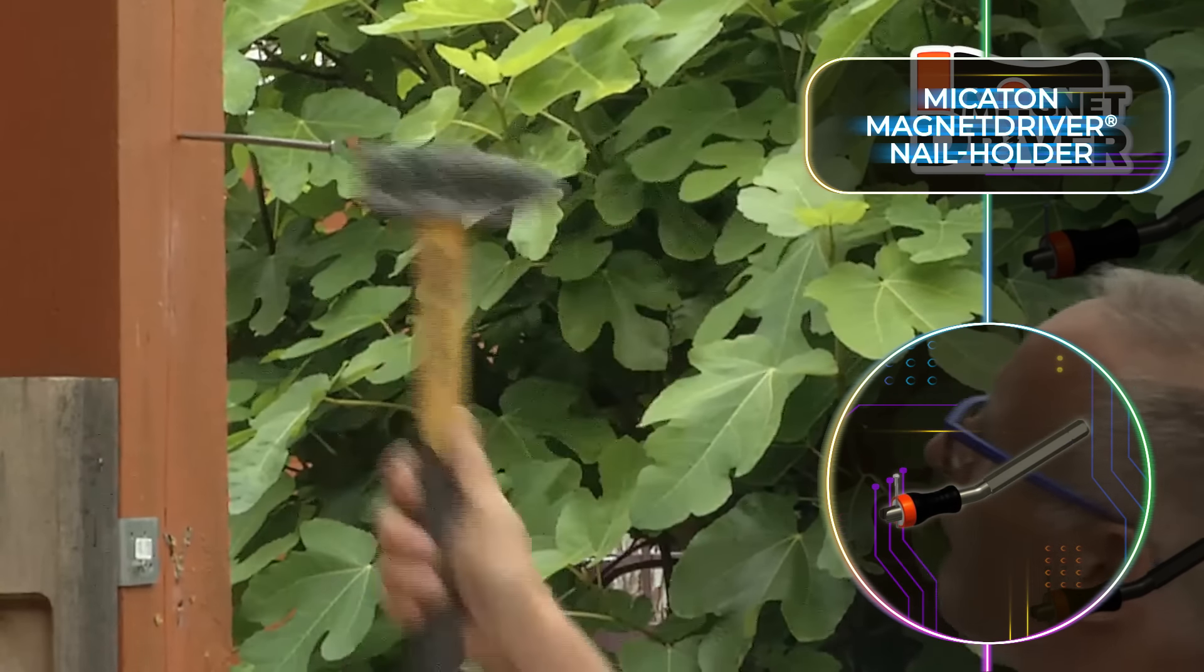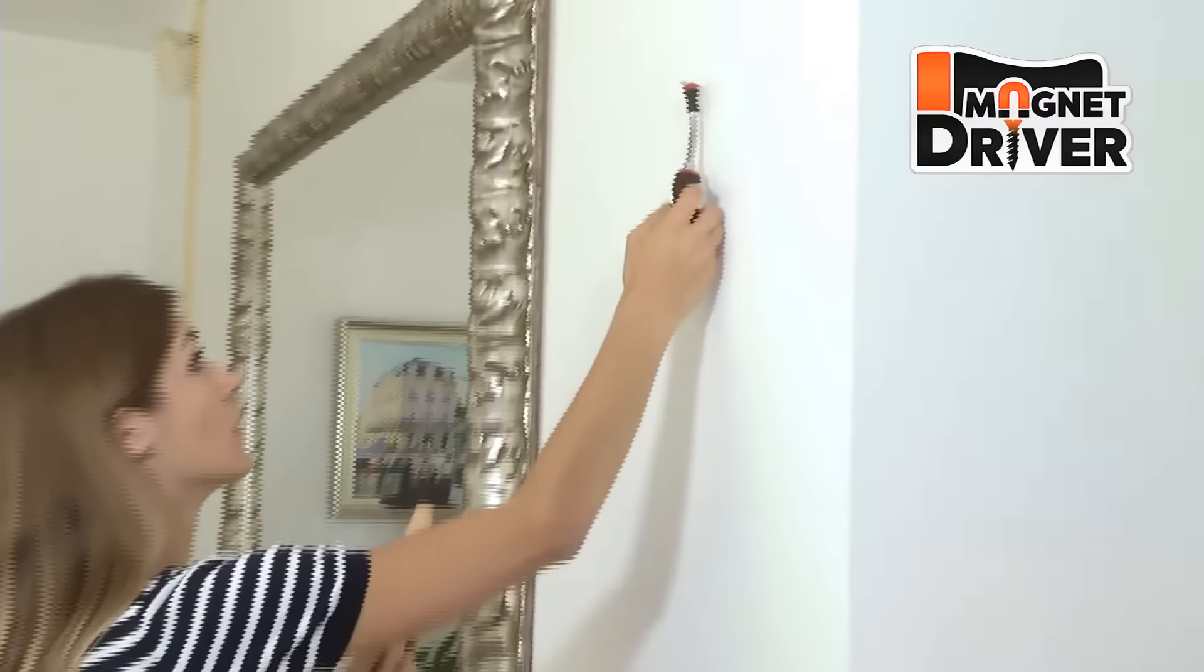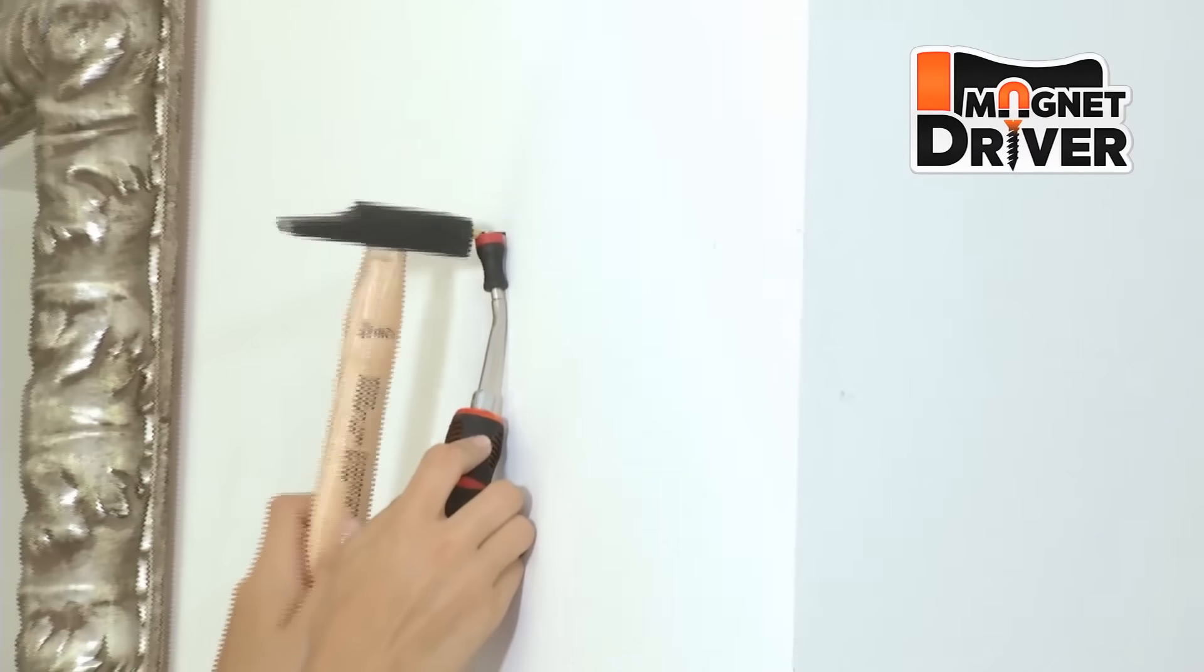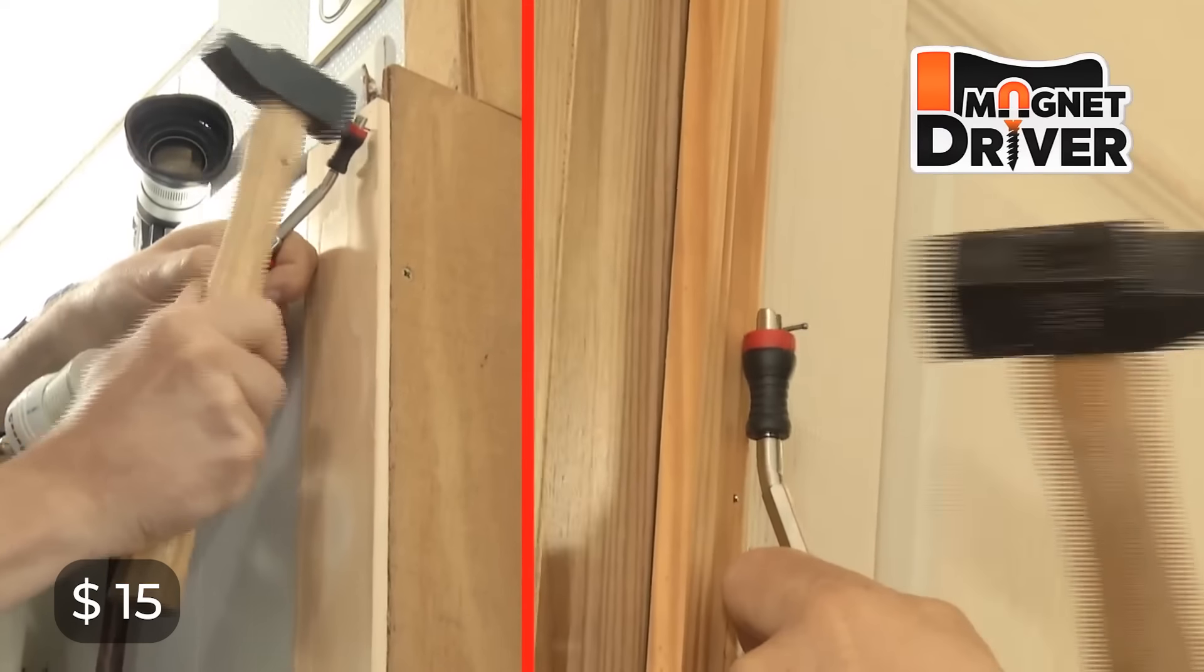Nails are securely held in place by a powerful neodymium magnet while you work. The standard kit will give you a screwdriver handle, a nail holder, and a curved extension, providing everything needed for the easiest job you've ever done. Despite its impressive features, the price remains refreshingly low at just $15, making it an affordable yet indispensable addition to your toolkit.